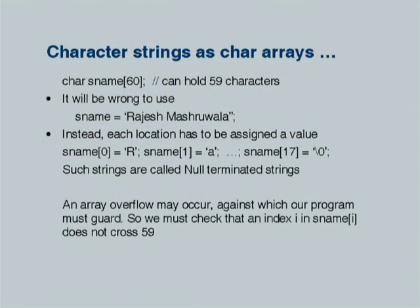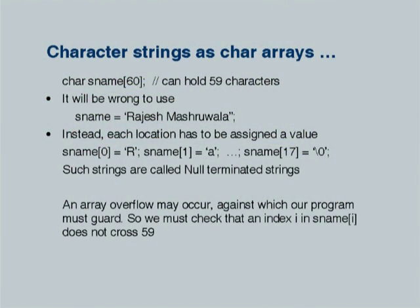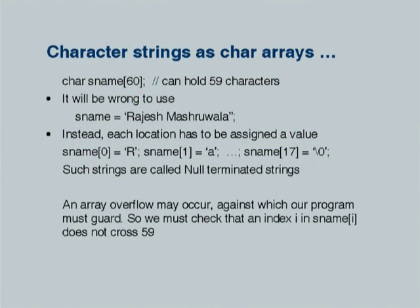Consider for example 'Rajesh Mashruwala' to be stored here. It will be wrong to use an assignment like s_name equal to 'Rajesh Mashruwala' — such an assignment operation is invalid in C. Although in C++ and most other languages it will be valid, where s_name would have been declared to be a variable of type string. Such a variable of type string does not exist in C, and therefore each location has to be assigned a value which is one symbol. We must ensure R goes to the 0th element, A goes to the 1st element, and so on.